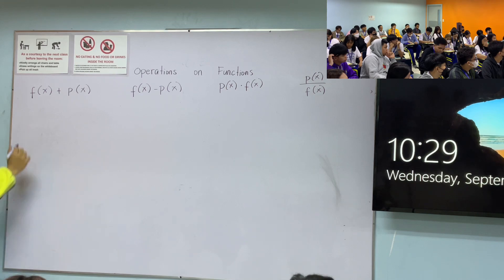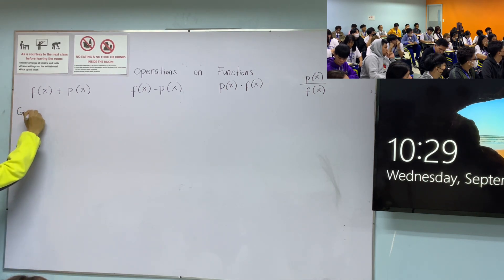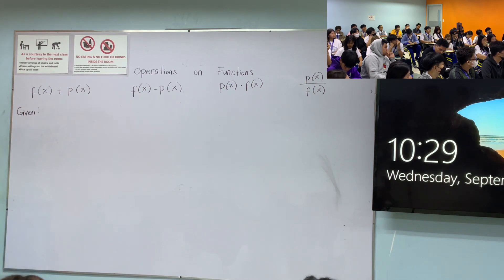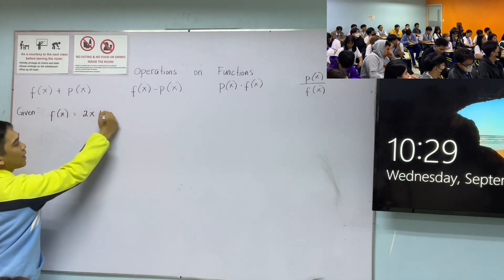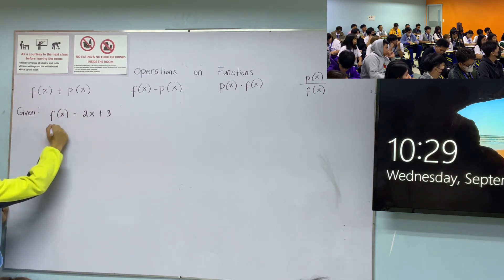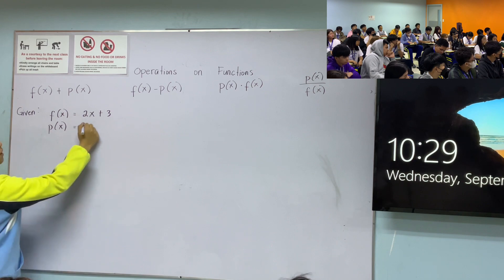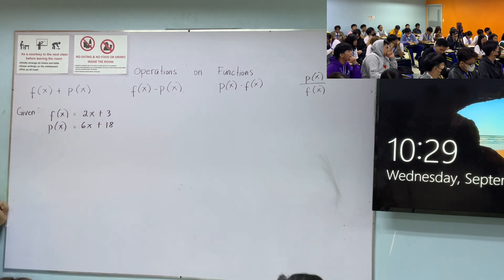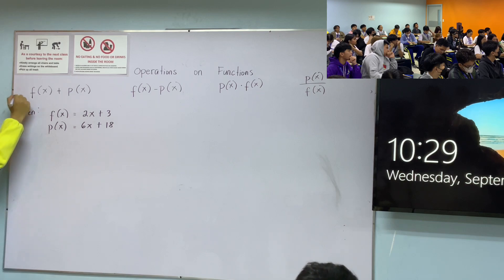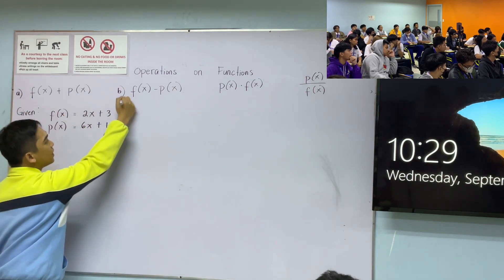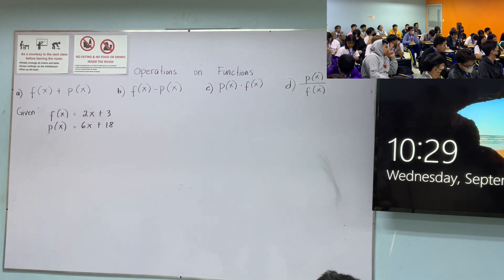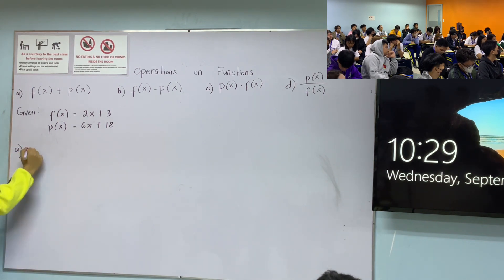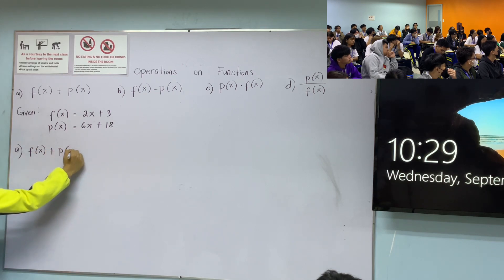So how do we solve these? Let's use given values. Let f(x) = 2x + 3 while p(x) = 6x + 18. We have four items: a, b, c, and d. So for item a, we have f(x) plus p(x).